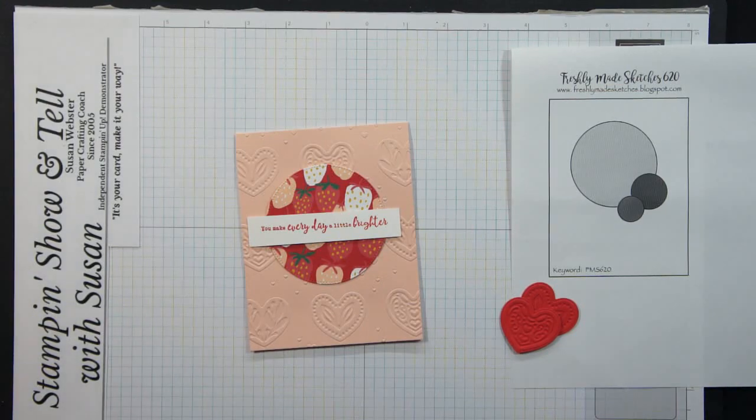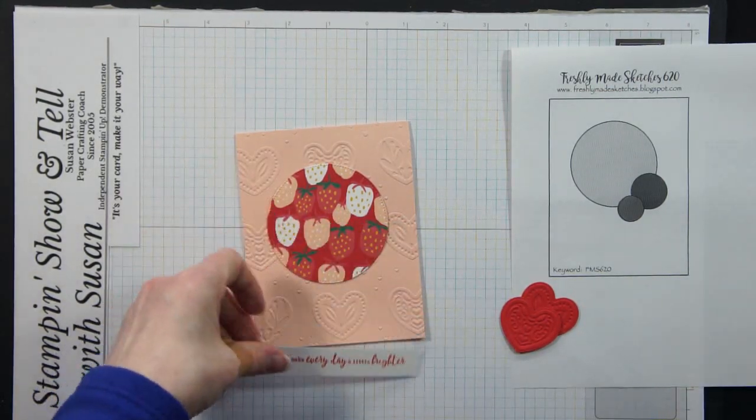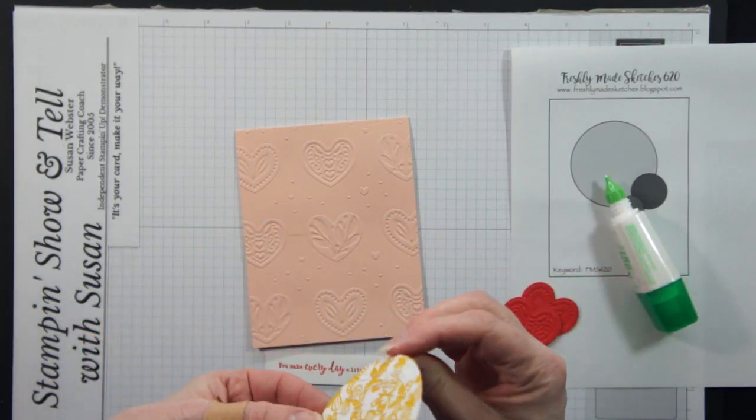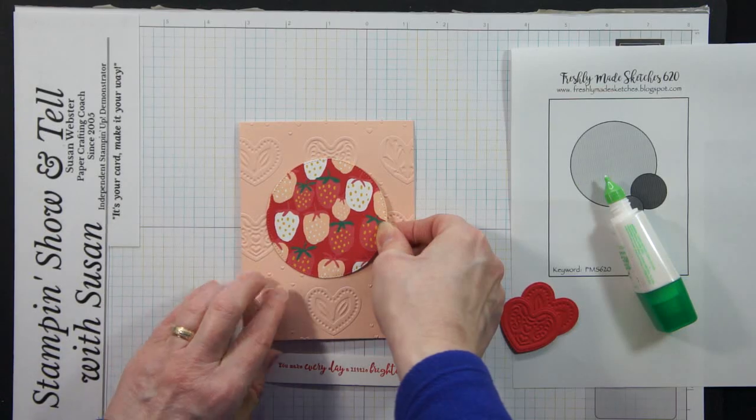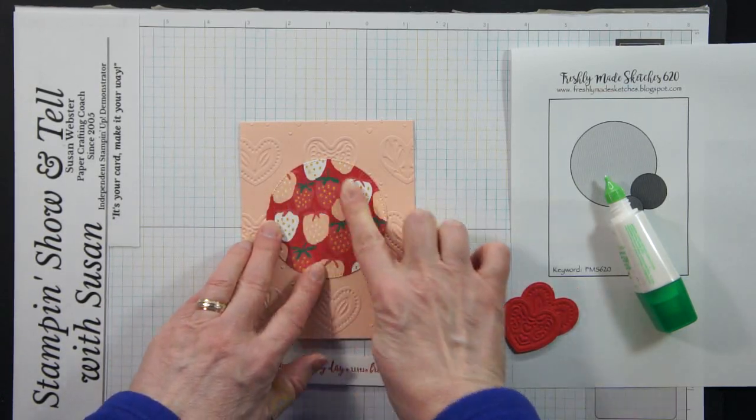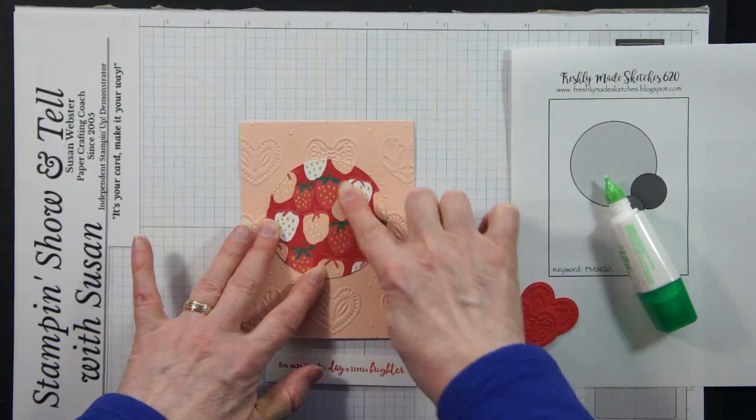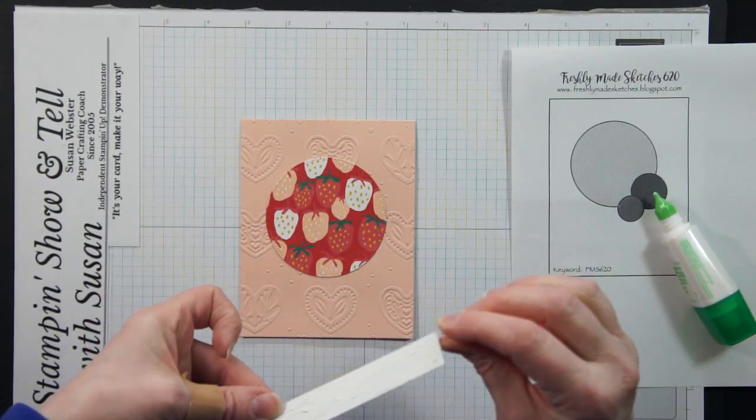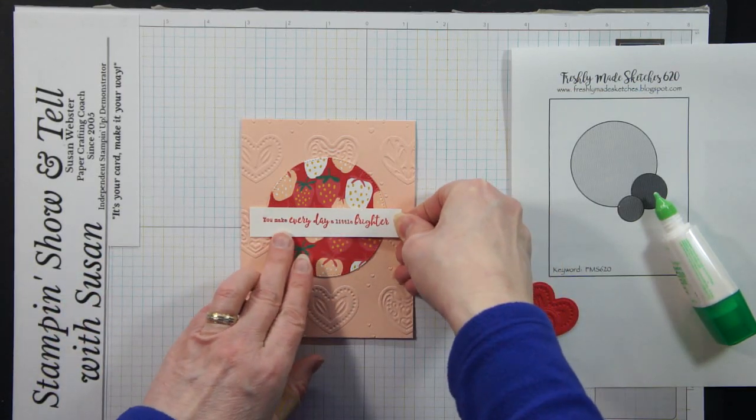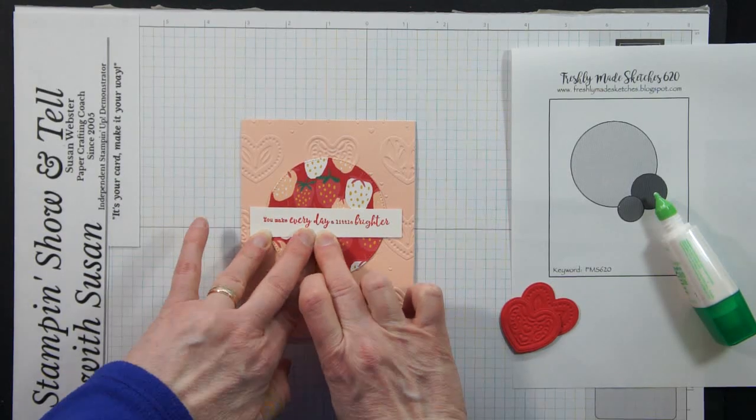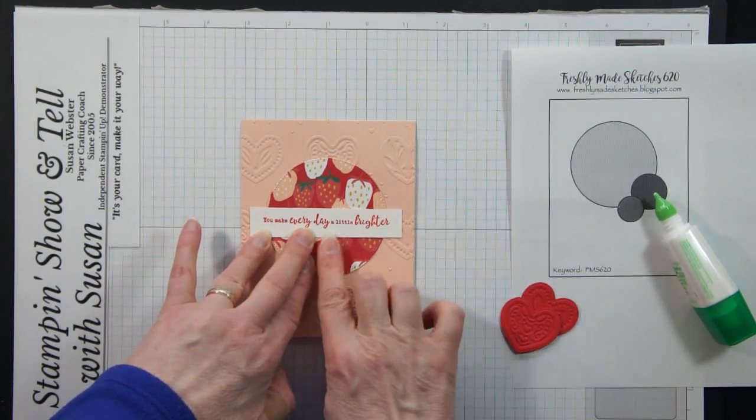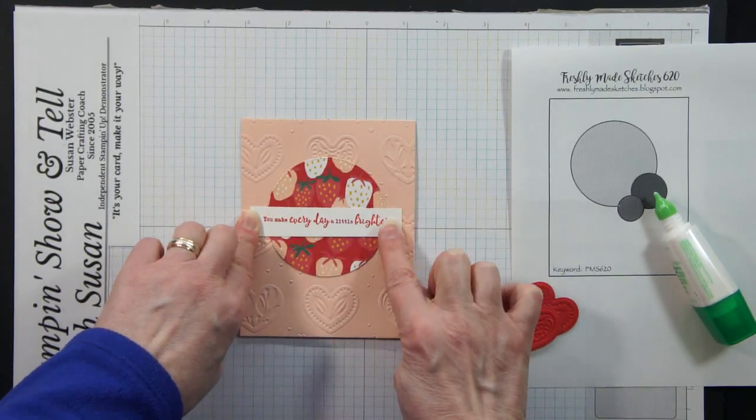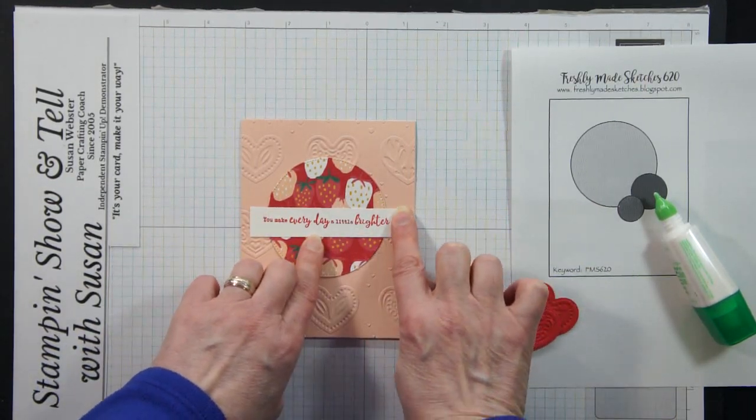Alright so let's just put this together. So I'm going to use liquid adhesive for the first two layers and then I'll pop that last one up on dimensionals. Okay so I've got my circle. Then I'm going to add my sentiment. Put that across to the center. Now if you wanted to you could use your scissors and fussy cut out that sentiment to make it a little more airy. More of the color to show behind from the DSP but I'm just leaving mine as a rectangle today.